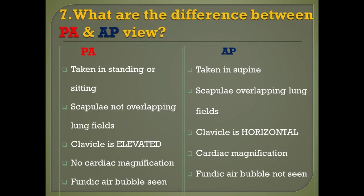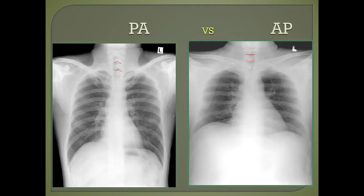In the AP view image you can see the clavicles are more horizontal. Comparing AP versus PA view: PA view is taken in standing or sitting position; AP view is taken in supine position. In PA view the clavicles are oblique and the scapula does not overlap the lung fields because both shoulders are placed in adduction. In AP view the scapula overlaps the lung fields. In PA view, taken from six feet, there is no cardiac magnification. In AP view, taken from four feet, cardiac magnification is seen. Fundic air bubble is seen in PA view but not in AP view.